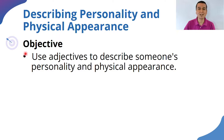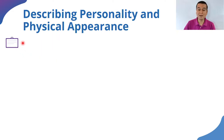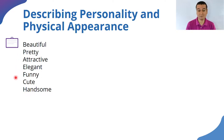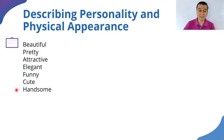To describe the physical appearance of a person, we have adjectives in general that we can use in a broad sense. For example, we could say that the person is beautiful, pretty, or attractive. I like the word 'attractive' because we are trying to sound more objective and not get emotionally involved. We could also say that someone is elegant, funny-looking, cute, or handsome — which is more formal and especially used for men.